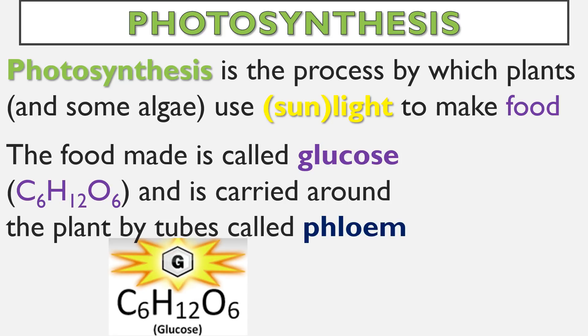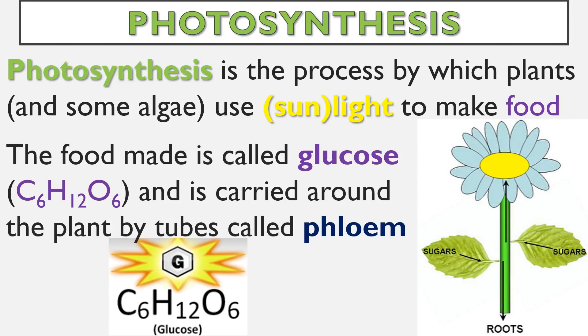Remember, the main thing that we're looking at here is glucose — it's all about making that. That's the fuel source. And of course, the phloem are the tubes that are going to be carrying it once it's being made in the leaves. Then it's up to the phloem to carry it around to the rest of the plant.